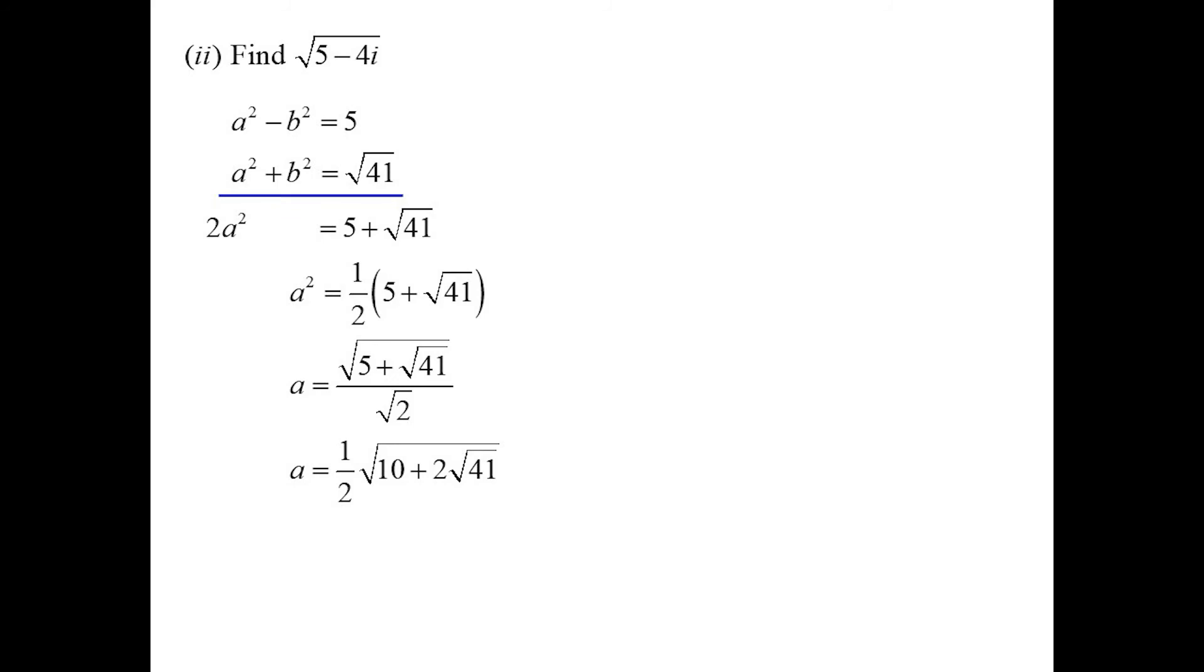All right. Well, 2a squared will be 5 plus the square root of 41. So a squared is a half of 5 plus the square root of 41. It's root 5 plus root 41, the root of all of 5 plus root 41, divided by root 2. Rationalize the denominator. I get a half of the square root of all of 10 plus 2 root 41. And then I can substitute that back in to work out B. And there's my answer.